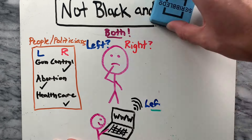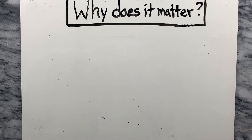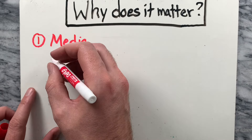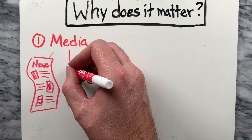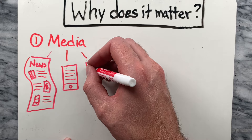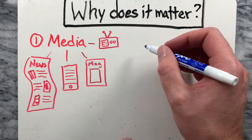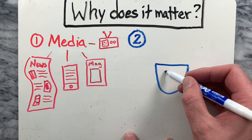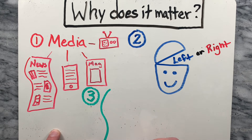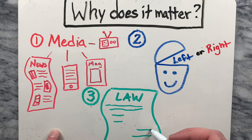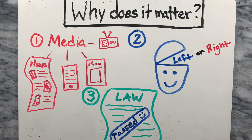Now you might be wondering, why does any of this matter? It's useful to have an understanding of the political spectrum for a number of reasons. Reason number one: it can help you recognize bias in the media, because it might influence how they present certain people and events. Reason number two: it can help you reflect on your own bias, whether you lean more towards the left or the right, and it might impact how you view politics in general. And reason number three: it can help you understand why a new policy or law is being supported depending on the political party behind it.